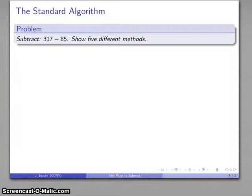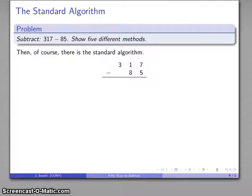And then we have the standard algorithm. 317 minus 85. If the only tool you have is a hammer, then the only thing you can do to a problem is to bash it to pieces. So we'll apply the standard algorithm.